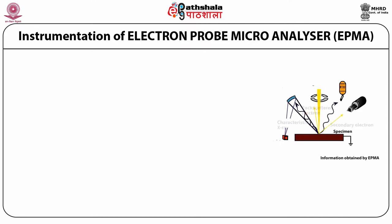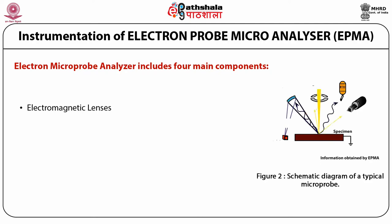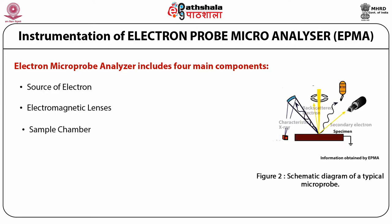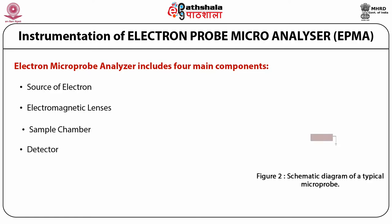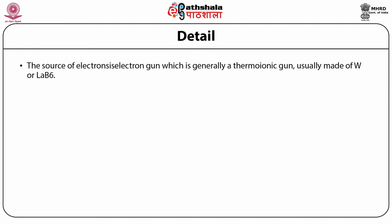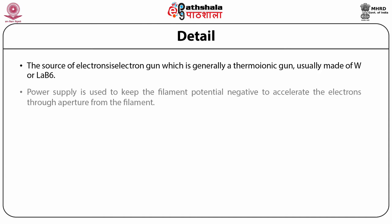We next discuss the instrumentation of Electron Probe Microanalyzer, such as EPMA. Electron microprobe analyzer includes four main components: first, the source of electrons; second, the electromagnetic lenses; third, the sample chamber; and fourth, the detector. The schematic diagram of a typical microprobe is shown in the video. As could be seen in this figure, the source of electrons is an electron gun which is generally a thermionic gun, usually made up of tungsten or LaB6.